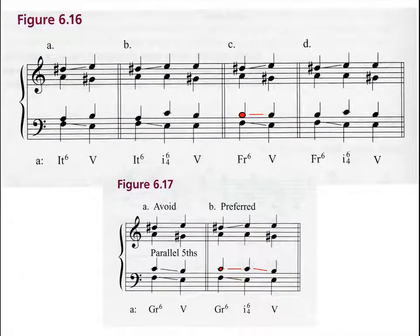The parallel fifths shown here are considered less objectionable when one voice is in the alto or tenor. They are forbidden when both notes are in the outer voices — soprano and bass. However, the parallel fifths can be avoided completely by resolving one tone at a time, going to a one-six-four and then onto a five chord.